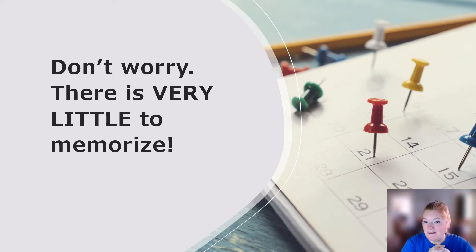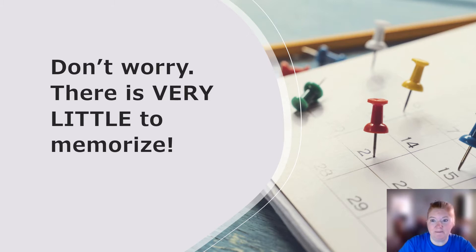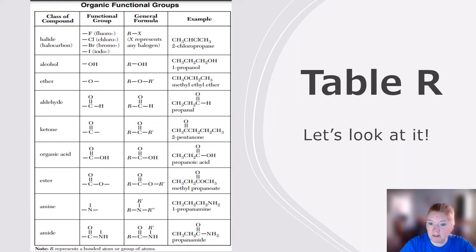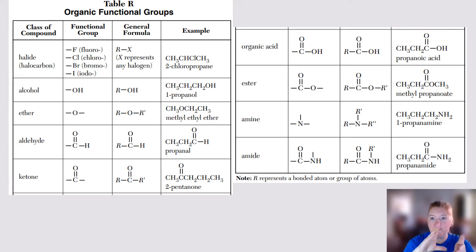Functional groups are pretty important, but don't worry — there's very little to memorize. You just have to take all the pieces you have and put them together. Look at Table R — a lot of information. It identifies the class of compound, the functional group, the general formula, and an example. Let's go through each column.